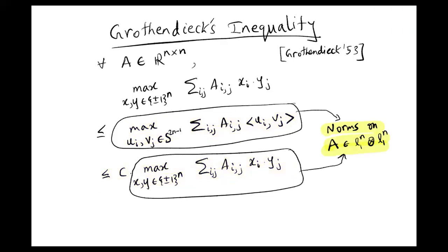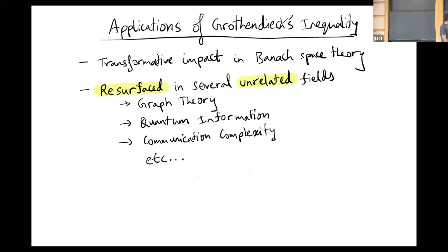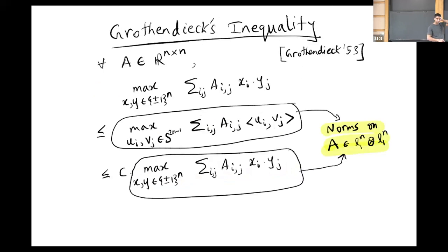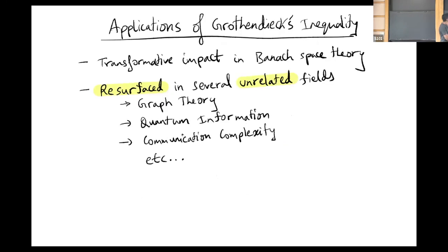Grothendieck's original motivation for studying this was he wanted to study what kind of norms you can define on the tensor product of two norm spaces. You could think of these two quantities as norms on the matrix A, where A is thought of as an element of L1 to the n tensor L1 to the n. This inequality was at first ignored for 20 years, but then it went on to have transformative impact in Banach space theory. Since then it has resurfaced in several unrelated fields like graph theory, quantum information theory, communication complexity, and so on.